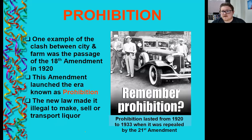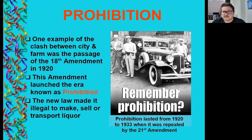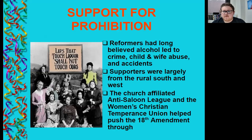Prohibition is still happening during this period. We talked about it in the progressive era. The passage of the 18th Amendment in 1920 launched the era known as prohibition — a new law making it illegal to make, sell, or transport liquor. Prohibition lasted from 1920 to 1933, when it was repealed by the 21st Amendment. Reformers had long believed alcohol led to crime, child and wife abuse, and accidents. Supporters were largely from the rural South and West. The church-affiliated Anti-Saloon League and the Women's Christian Temperance Union helped push for the 18th Amendment.